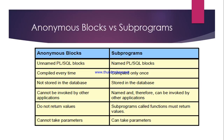The next difference is that an anonymous block cannot be invoked by other applications, whereas subprograms can be invoked by other applications. And the next difference is that anonymous blocks do not return values, whereas subprograms — called functions or procedures — must or may return values.